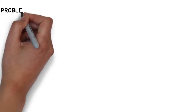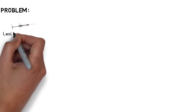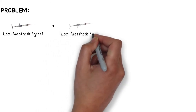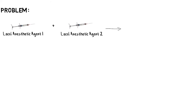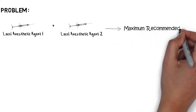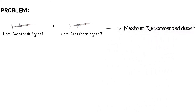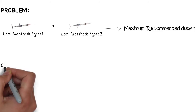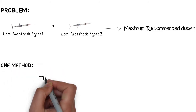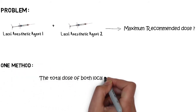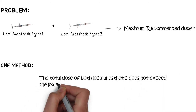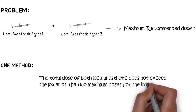One problem that commonly arises is how much dose should be injected when two different local anesthetic cartridges containing two different agents are used. There is no guaranteed formula for determining the MRD for such cases. However, one commonly used and recommended method is that the total dose of both anesthetics should not exceed the lower of the two maximum doses for the individual agents.